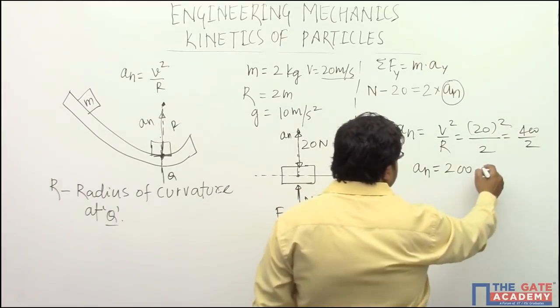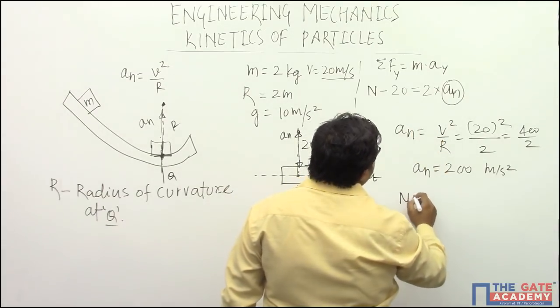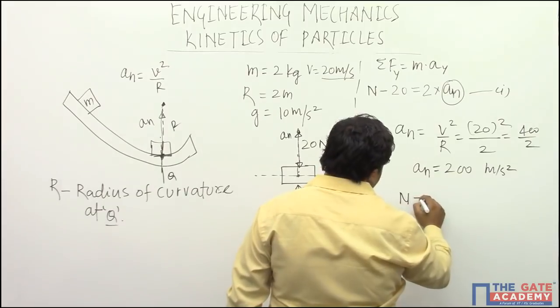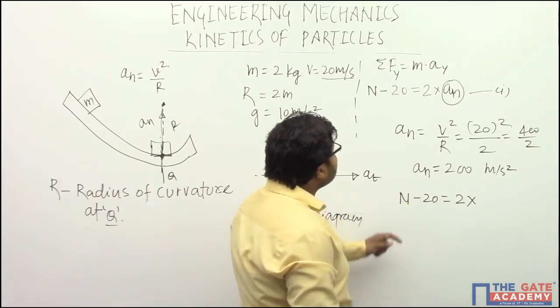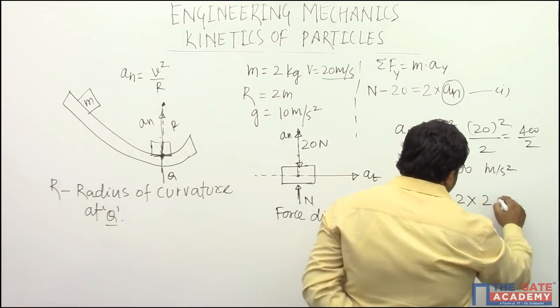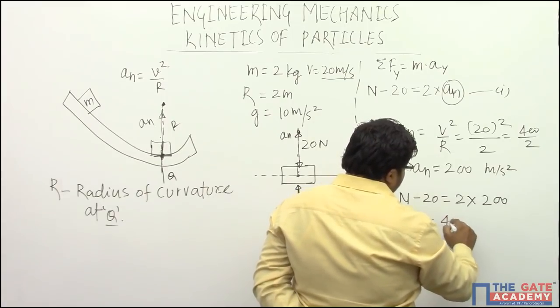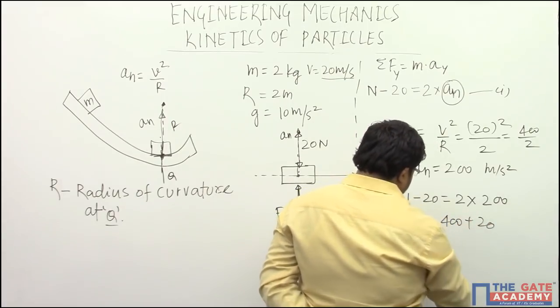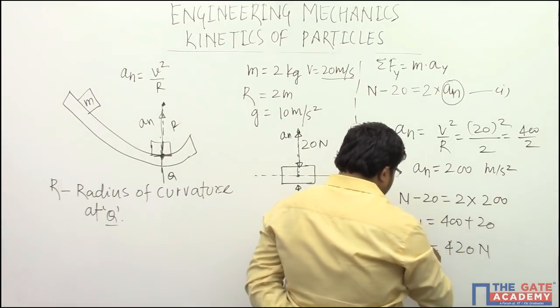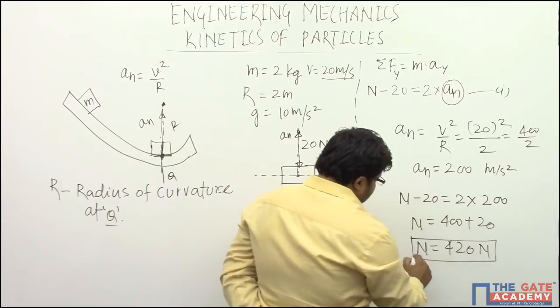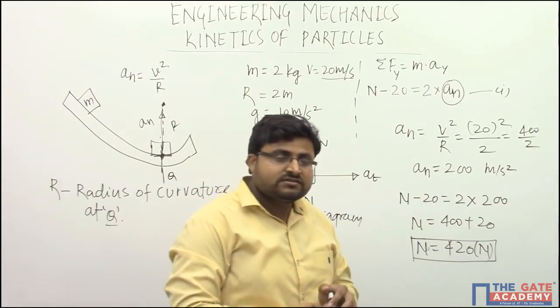Now a_n is 200 meter per second square. So we can put this value in our first equation. Then we will get n minus 20 equals 2 multiplied by a_n. a_n value we are getting 200, so n will be equals to 400 plus 20. So our final answer for this normal reaction should be 420 newtons.